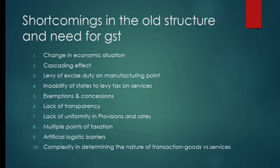The ninth shortcoming is artificial logistic barriers. Due to the presence of state information collection systems, the movement of goods from one state to another was hampered, and each movement cost at least two percent CST plus working capital blockages due to delays in clearances.